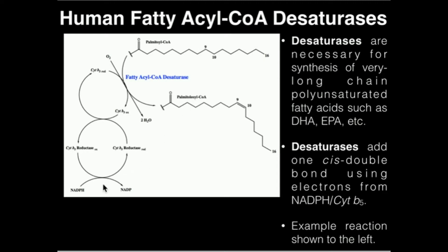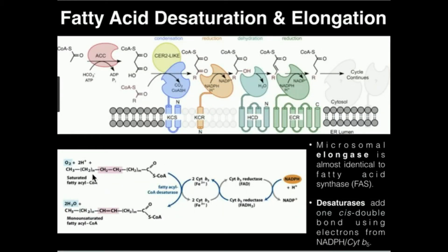How does this actually work? It's an electron transport chain. NADPH delivers electrons to an enzyme called cytochrome B5 reductase, reducing it to its reduced form. Then this enzyme reduces cytochrome B5, giving us reduced cytochrome B5. Fatty acyl-CoA desaturase uses oxygen and this reduced cytochrome B5 to add the double bond between positions 9 and 10. In the schematic at the bottom, NADPH transfers electrons to cytochrome B5 reductase, then to cytochrome B5, then to the fatty acid, which generates the double bond, always in the cis conformation.